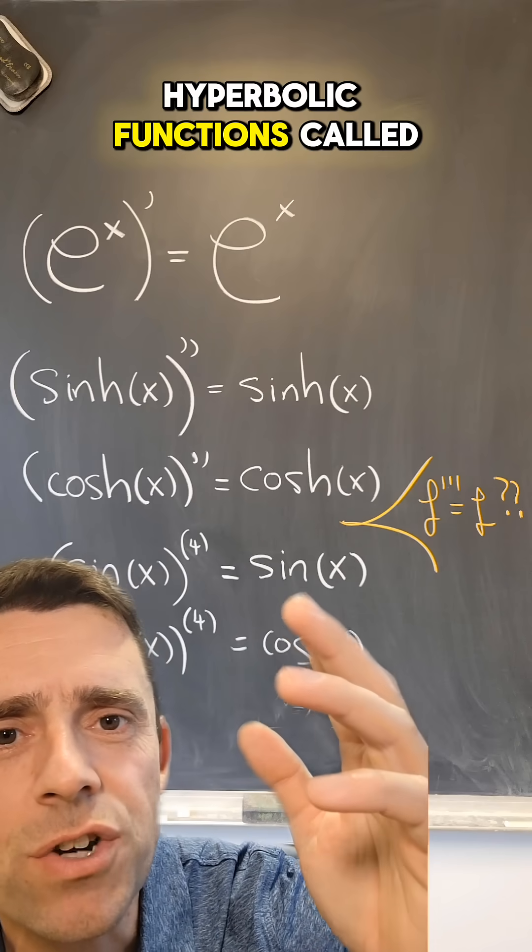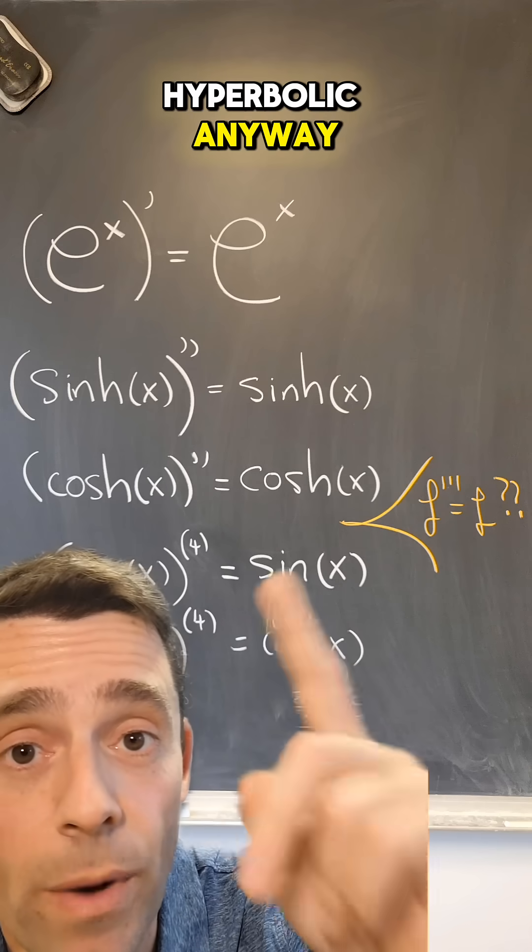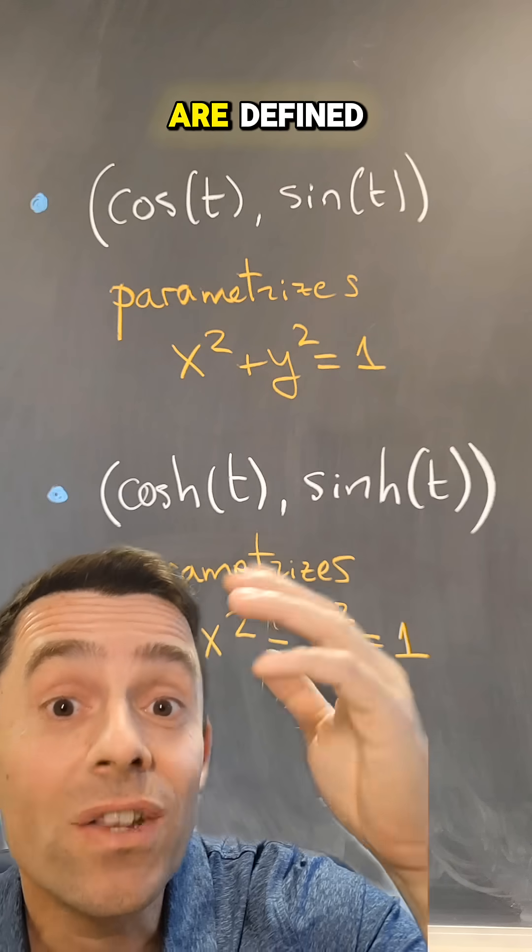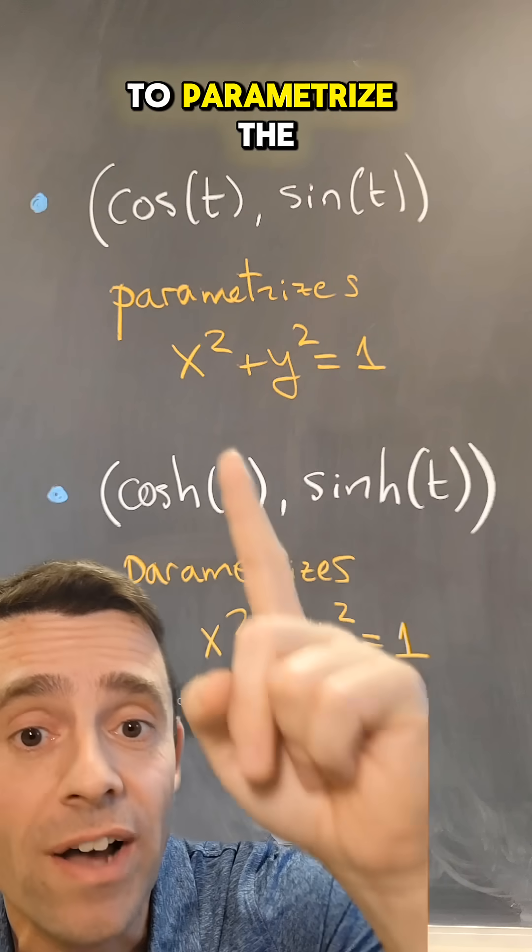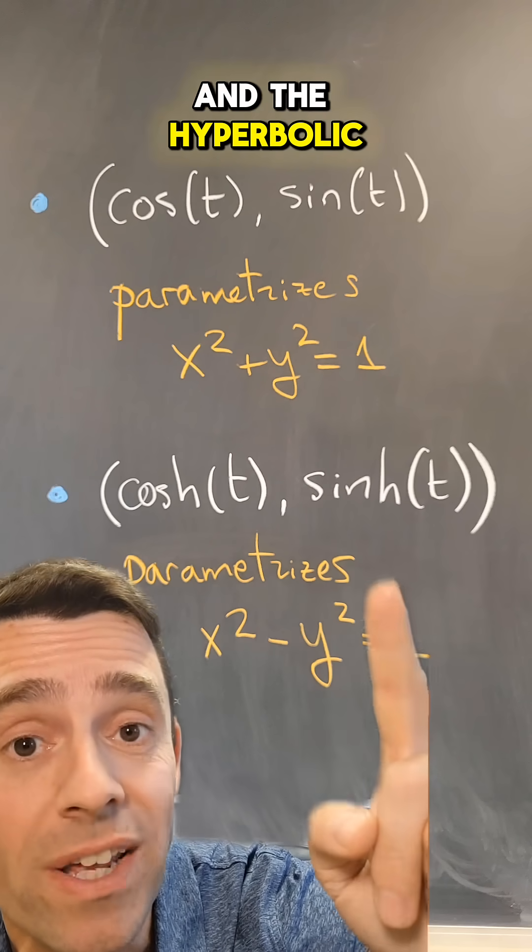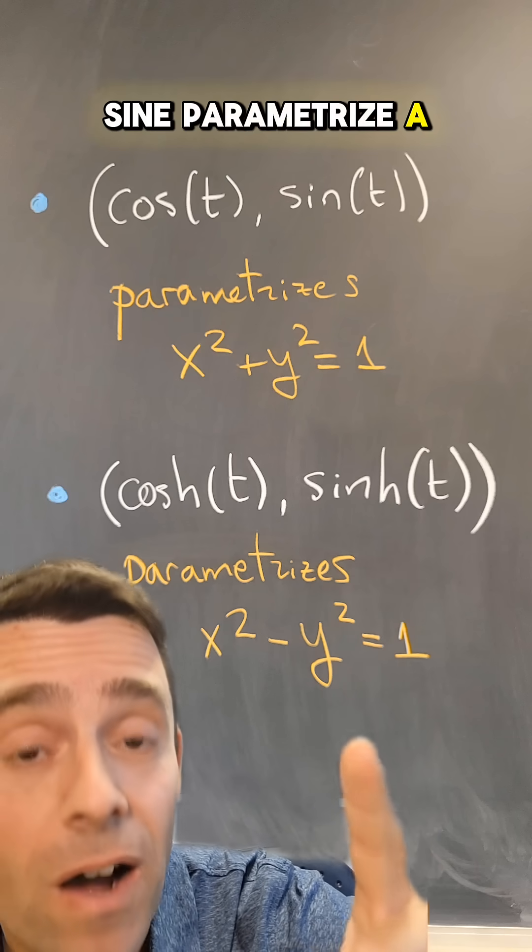Why are the hyperbolic functions called hyperbolic anyway? The reason is that just like cosine and sine are defined to parametrize the circle of radius one, the hyperbolic cosine and the hyperbolic sine parametrize a hyperbola.